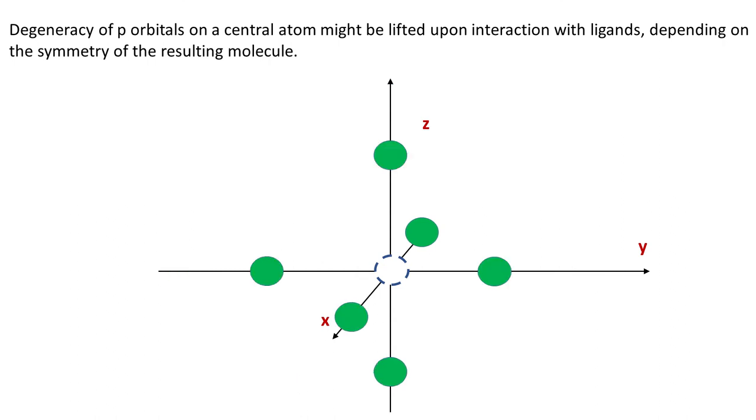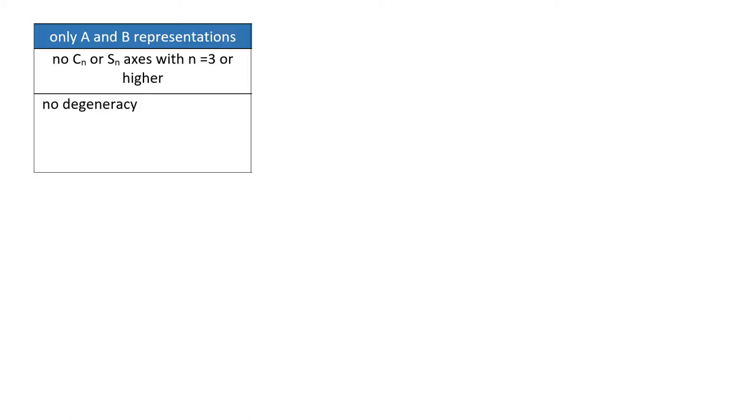So to sum up, if a molecule belongs to a group where representations are only a and b, then all the p orbitals and all the d orbitals have different energies.